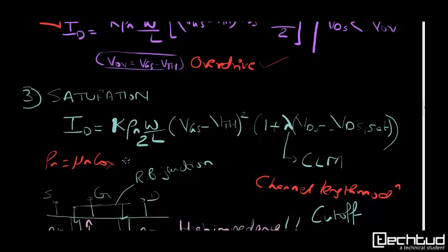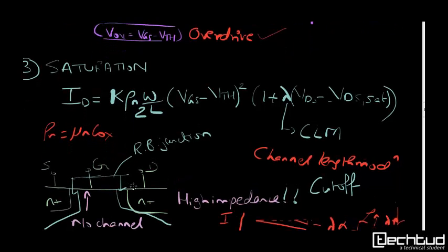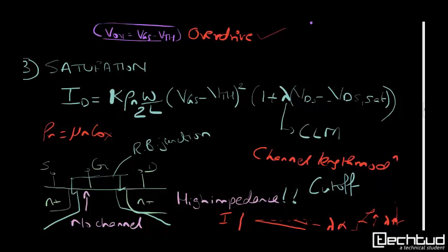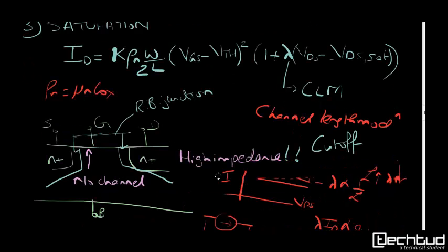So channel length modulation effect - when you want that your transistor should behave like a constant current source, it deviates it a bit. If you see the I versus VDS curve, you are expecting it should be independent of VDS but you will see there is slight deviation and that slope is lambda. These things you should remember.